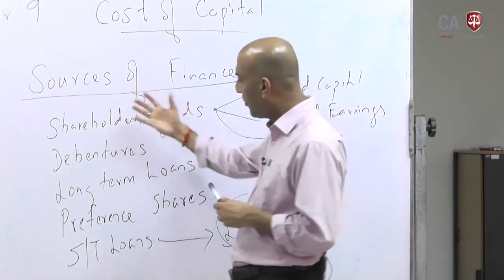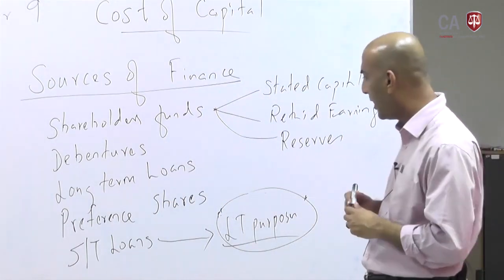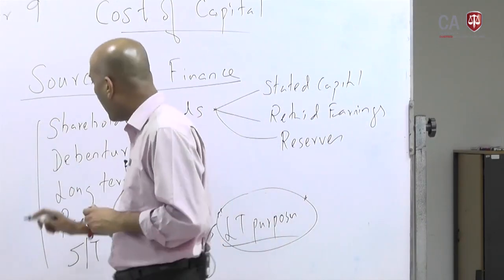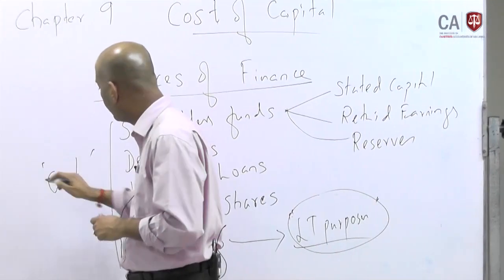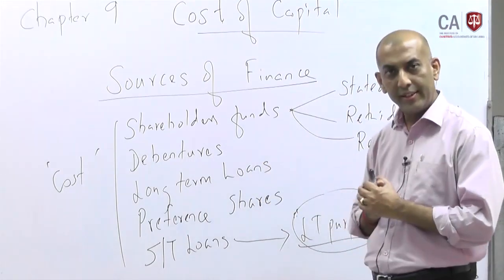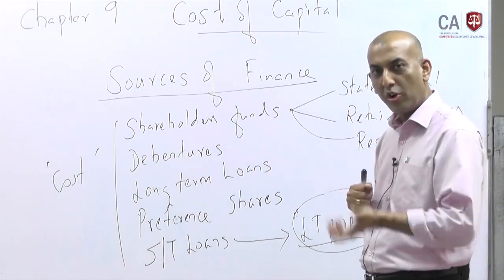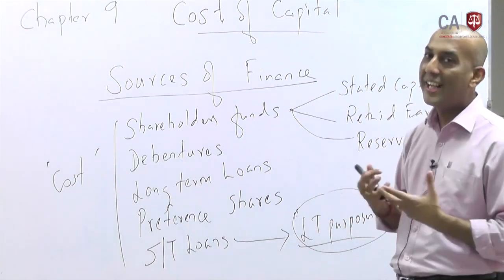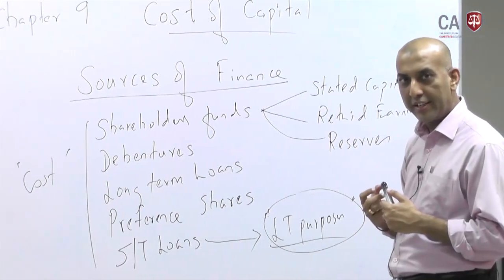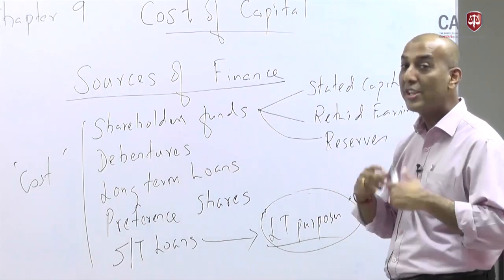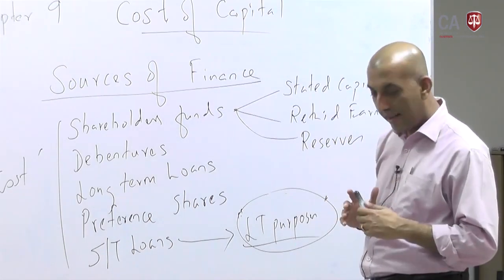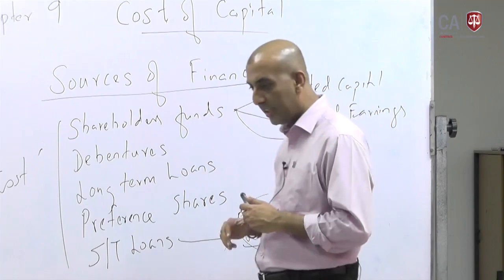Each source of finance has pluses and minuses. These sources of finance definitely have a cost. If you are a company taking money from these sources, there is definitely a cost involved to use these funds. So what is that cost? That is called cost of capital — the cost of using various sources of funds to run your organization.